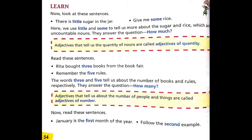Read these sentences: Rita bought three books from the book fair. Remember the five rules. The words three and five tell us about the number of books and rules respectively. They answer the question, 'How many?' Adjectives that tell us about the number of people and things are called adjectives of number. Numbers like three, five, two, four, etc. tell us how many, so they are included in adjectives of number.